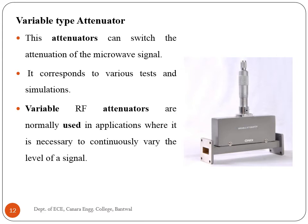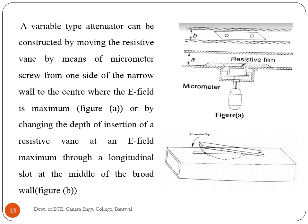Variable attenuators can switch the attenuation of the microwave signal, corresponding to various tests and simulations. Variable RF attenuators are used in applications where it is necessary to continuously vary the level of a signal. A variable attenuator can be constructed by moving the resistive vane via a micrometer screw from one side of the narrow wall to the center where the E-field is maximum, or by changing the depth of insertion of a resistive vane through a longitudinal slot at the middle of the broad wall. A maximum of 90 decibel attenuation is possible with a voltage standing wave ratio of 1.05.